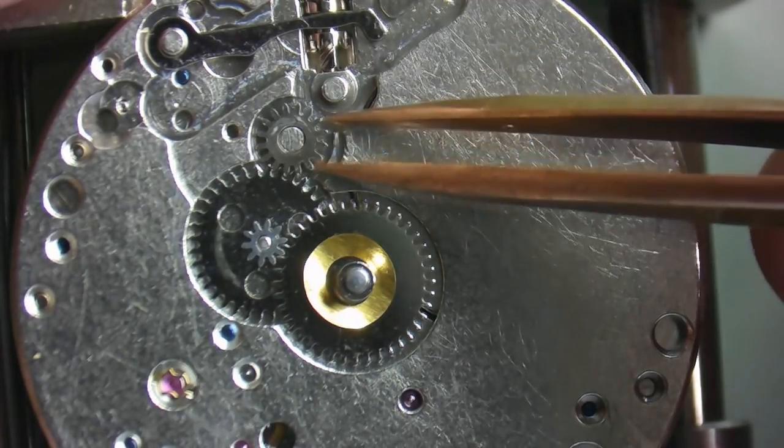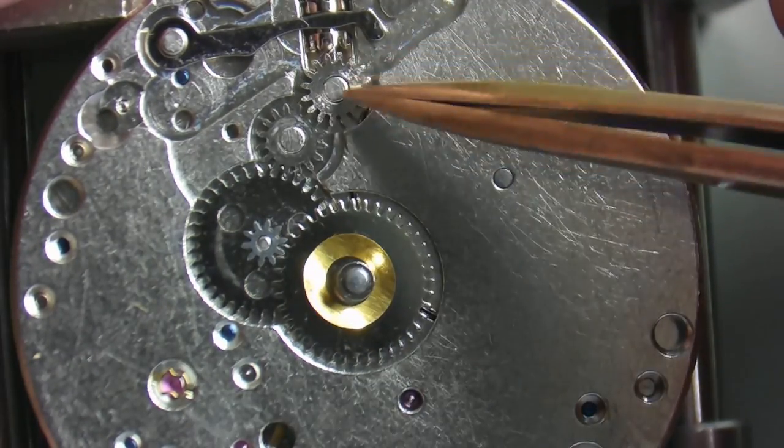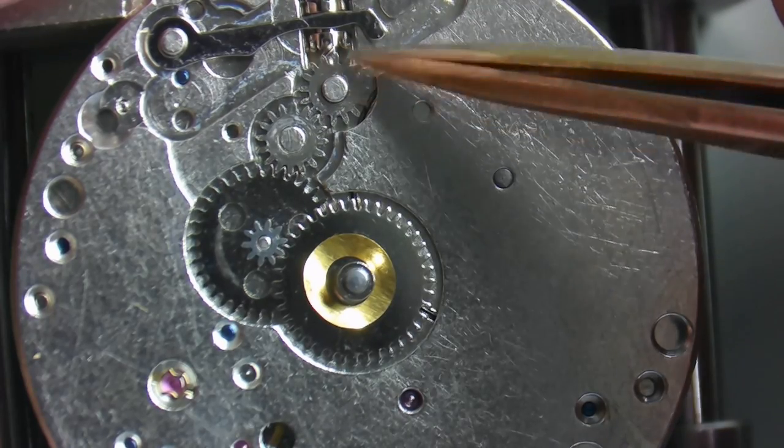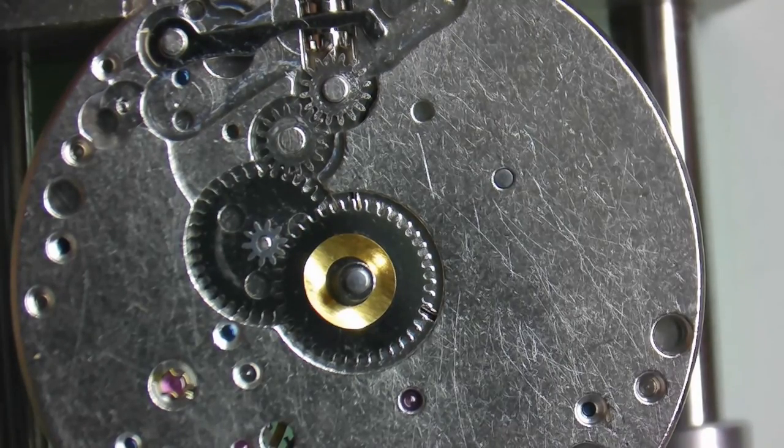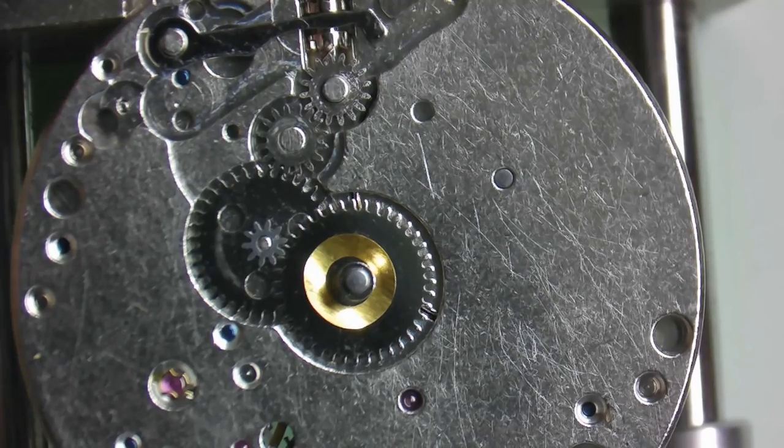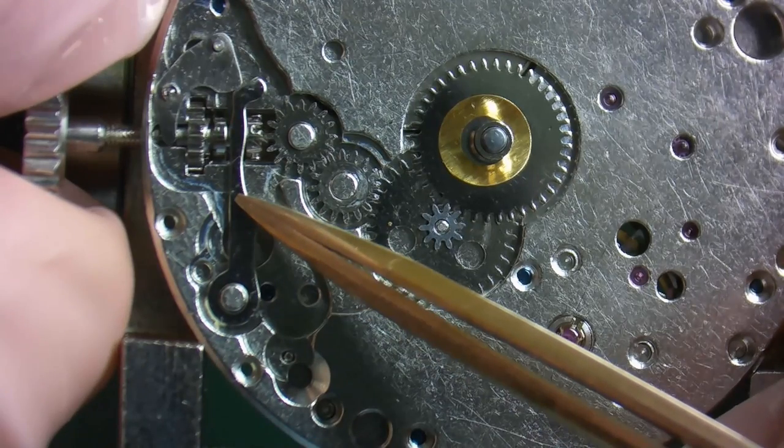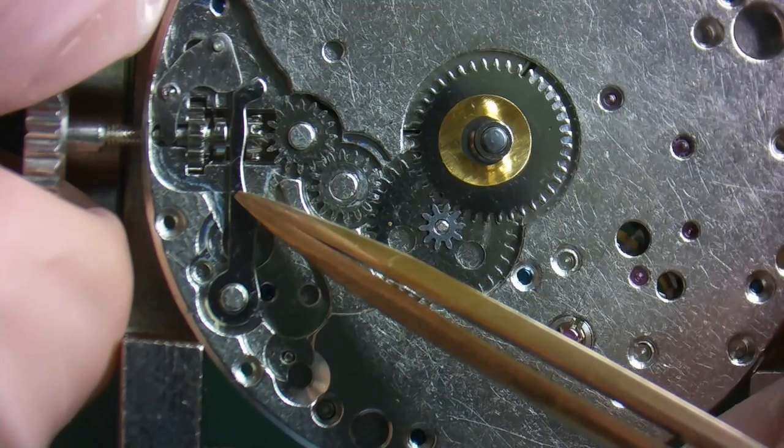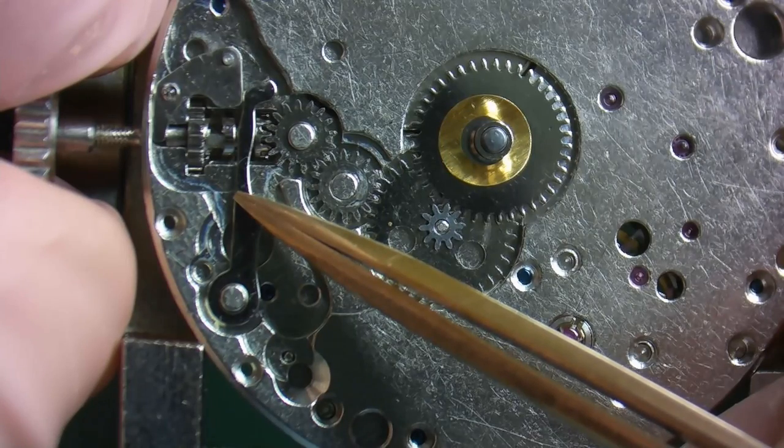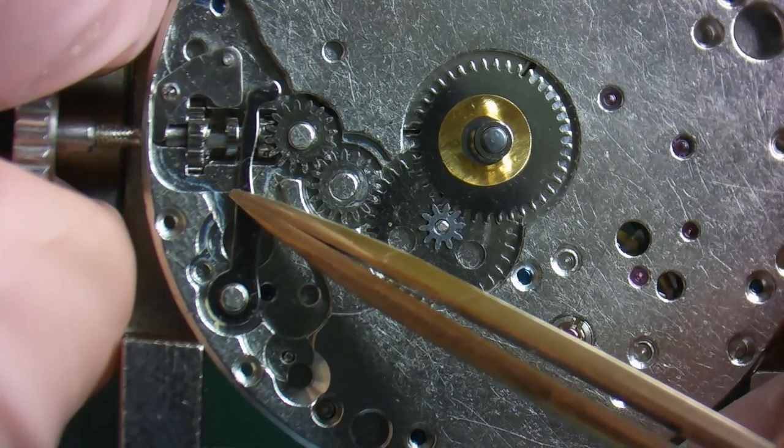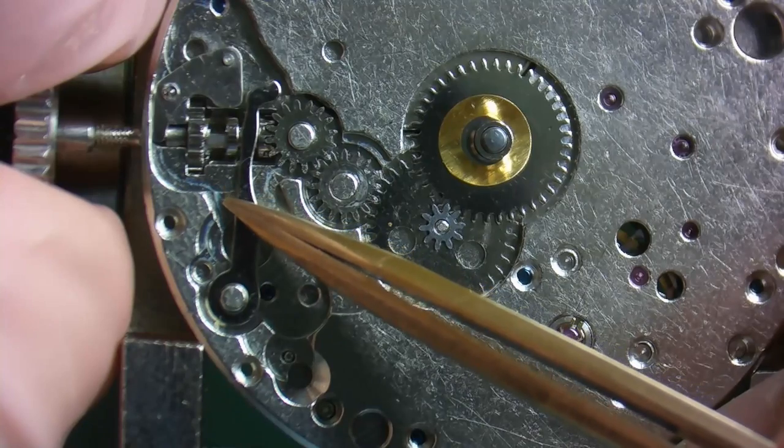Now to complete the assembly of the motion works we have two intermediate wheels. The intermediate wheel's sole purpose is to transfer the motion of the sliding pinion to the hour and minute wheel to set the time. Now as you can see, when the stem is pulled out to the second position on this movement, the groove of the stem which is holding the pin of the setting lever forces the setting lever to push the yoke forward. The yoke, which is sitting in the groove of the sliding pinion, causes the teeth of the sliding pinion to mesh with the teeth of the first intermediate wheel, which operates the motion works.